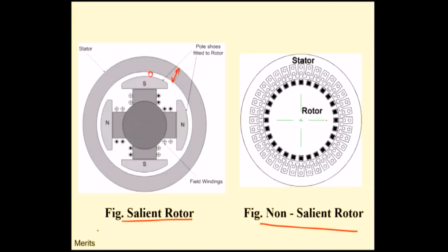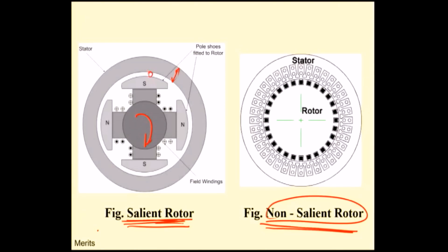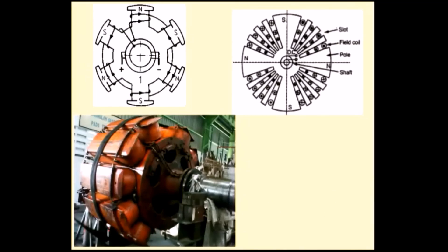In the salient pole rotor, if you rotate at high speed, the projected poles produce more noise because the air gap is small and the rotor has to push through the air. In contrast, the non-salient pole rotor gives noiseless operation. The salient pole rotor has a larger diameter, making the entire machine larger, and it is not a robust construction. The non-salient pole rotor has a smaller diameter and is robust in construction. A practical 10-pole salient pole rotor can be seen as an example.